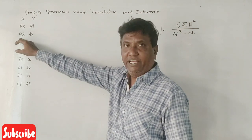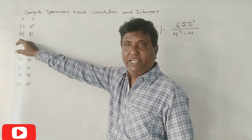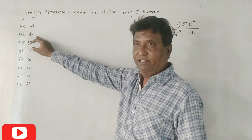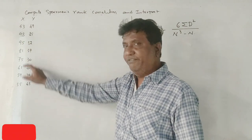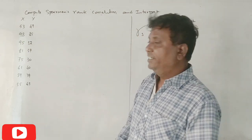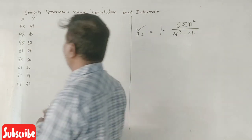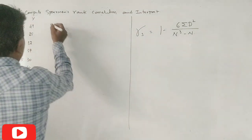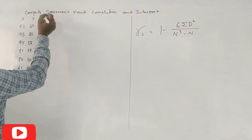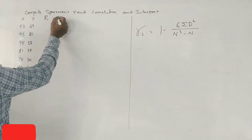They are marked by 99 marks, they are marked by 98 marks, Y is marked by 25 marks. These are the different scores. This is the rank of this rank.